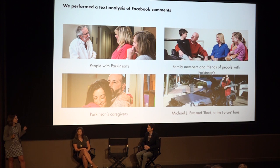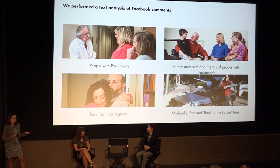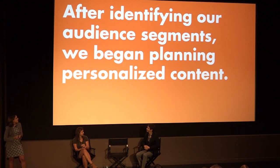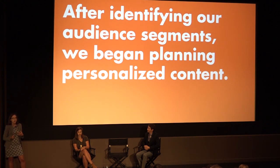Based on that, we were able to divide up our audience into four segments: people with Parkinson's; friends and family of people with Parkinson's who want to keep up with the news; Parkinson's caregivers — generally adult children or spouses who provide care usually in the later stages of the disease; and people who just love Michael J. Fox and Back to the Future. After identifying these segments, we began planning out personalized content that would really speak to each of them, help drive traffic to our website, and also help us acquire email addresses.